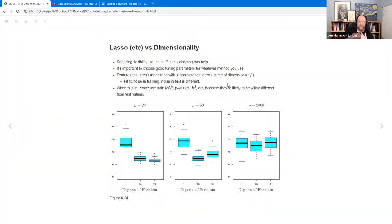And then the important thing that they point out in this section is that you don't really want to look at your training set mean square error or P values or R squared or whatever to really determine if your model is any good. Because when you have a high number of parameters, especially when you have a high number of parameters, they can be wildly different from the test value. So have a test set that you're actually using to evaluate whether the model's any good. And that's all I have. I didn't realize it was going to be so quick. Took a long time to get to that set of notes.